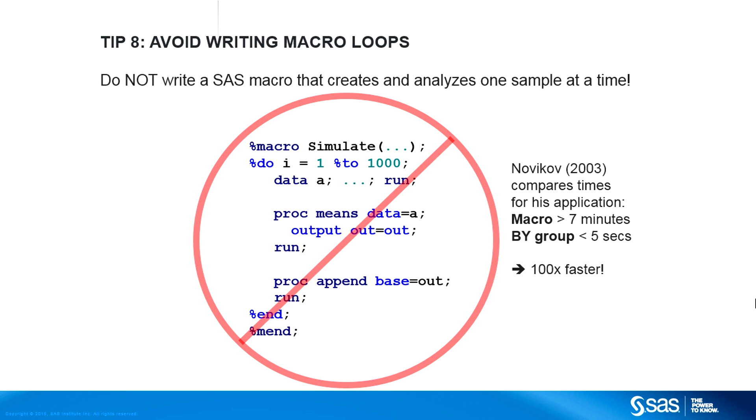Now that we've discussed how to efficiently run a Monte Carlo simulation, here's what you should not do. It's tempting to think, hmm, well, I know how to generate one sample of the data and to analyze it. I'll just write a macro loop that repeats this process and uses PROC APPEND to concatenate the statistics into a single file. This is a bad idea.